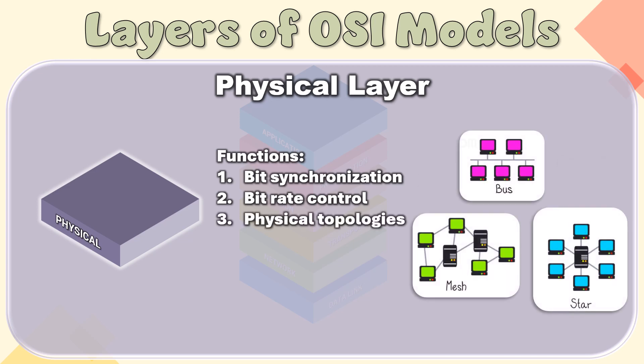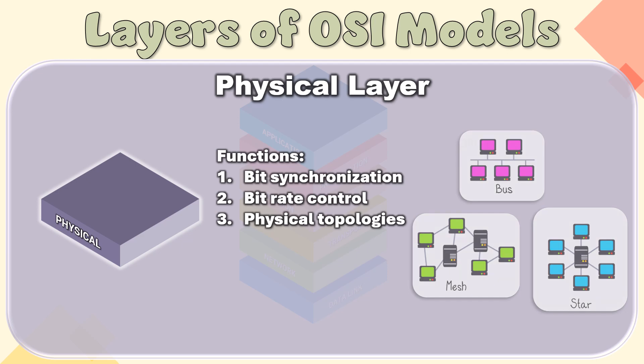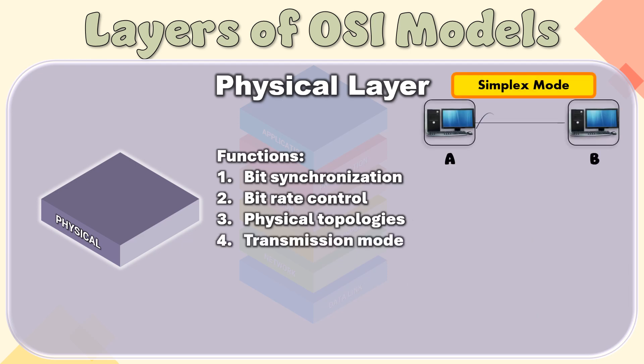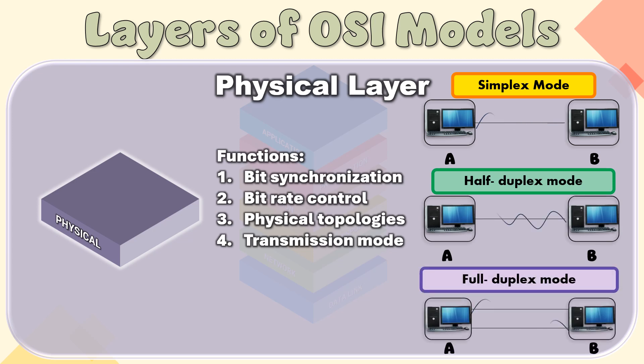Physical Topologies: The physical layer specifies how the different devices and nodes are arranged in a network, i.e., bus, star, or mesh topology. Transmission Mode: The physical layer also defines how the data flows between the two connected devices. The various transmission modes possible are simplex, half-duplex, and full-duplex.